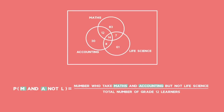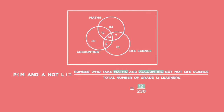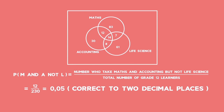To determine the probability that a randomly selected learner takes Maths and Accounting but not Life Sciences, look at the number in the intersection between Maths and Accounting, but exclude learners who take Life Sciences as well. From the Venn diagram we can see that 12 learners take Maths and Accounting but not Life Sciences. So the probability is 12 divided by the total of 230, which gives 0.05, correct to two decimal places.